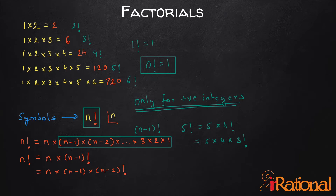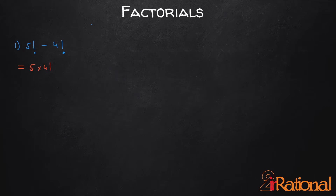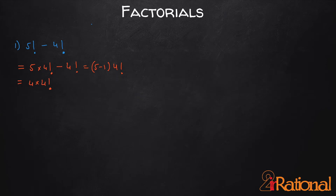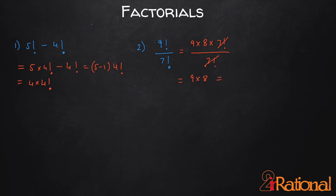We can use these simple concepts to solve basic sums involving factorials. In the first sum, 5! can be written as 5 × 4!, and if we take 4! as common we get 4 × 4!. You can write 4! as 24 and simplify further. For the second example, I get 9! as 9 × 8 × 7! and then cancel out 7! to get 9 × 8, which is 72.